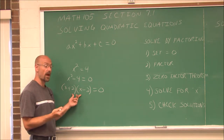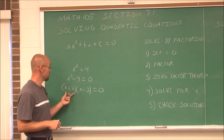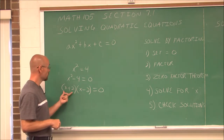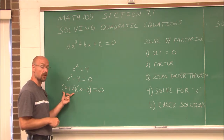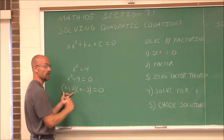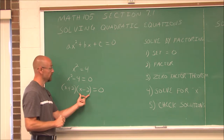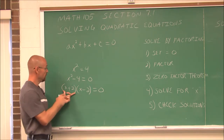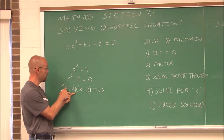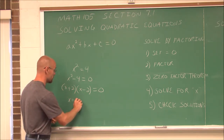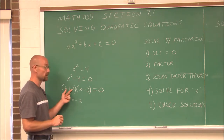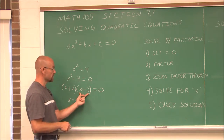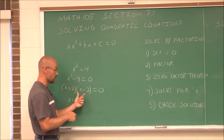We can use something called the zero factor theorem. The zero factor theorem explains something we should already know: 0 times anything is 0. So if this factor, this quantity, is 0, then 0 times anything will equal 0. Same thing here — if this factor is 0, 0 times anything will still give us 0. So if I set this factor equal to 0, I can solve for x. What plus 2 gives me 0? If x is negative 2, negative 2 plus 2 is 0.